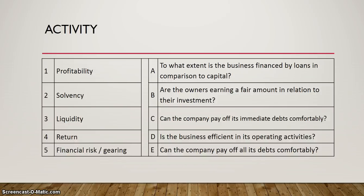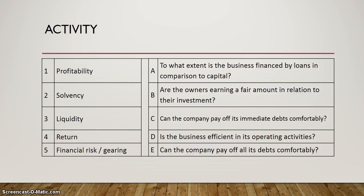I've got an activity here for you to do — it's just a simple matching activity. You have the concepts in this first column: profitability, solvency, liquidity, return, and financial risk and gearing. I want you to take a page and write down next to each of these concepts which question does it answer. I'm going to give you a minute to look at that and then I'm going to reveal the answer to you. Another hint when answering something like this is to actually read the question and then look at which concept it refers to.